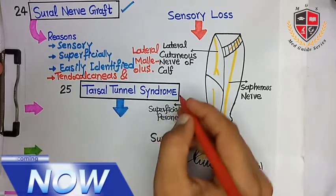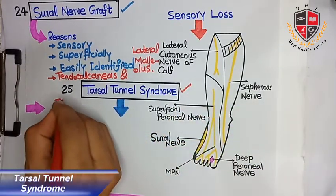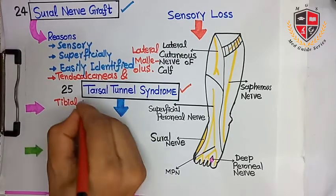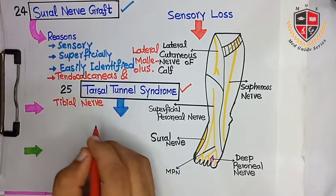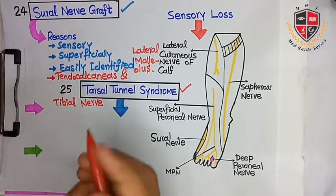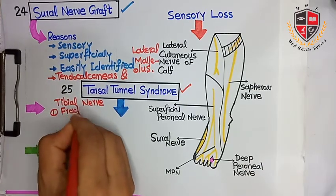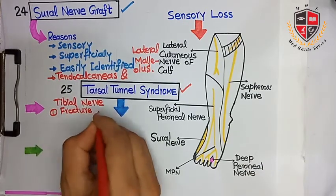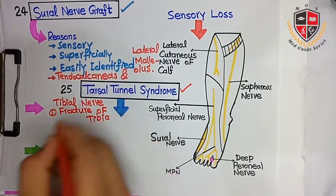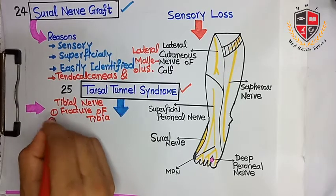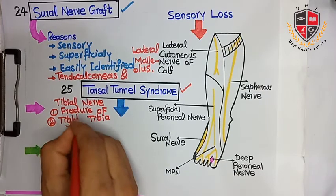The next clinical is Tarsal Tunnel Syndrome. The tibial nerve is the nerve of the leg. When the tibial nerve passes through the flexor retinaculum of the leg, it can be injured. The site of injury can be a fracture of the tibia or through tight plasters.